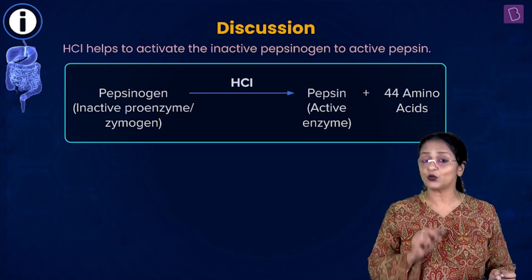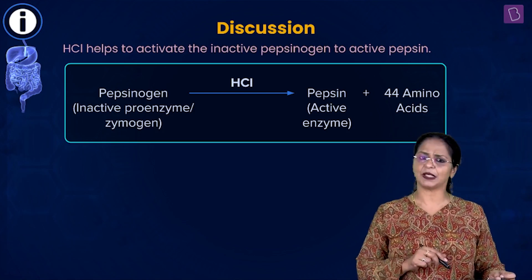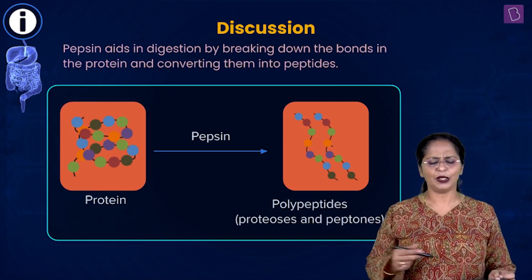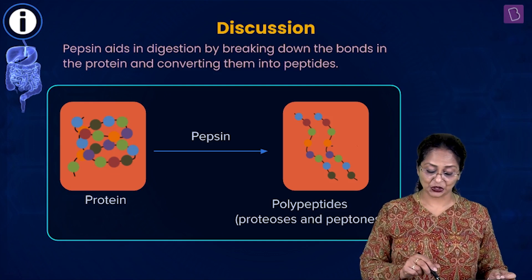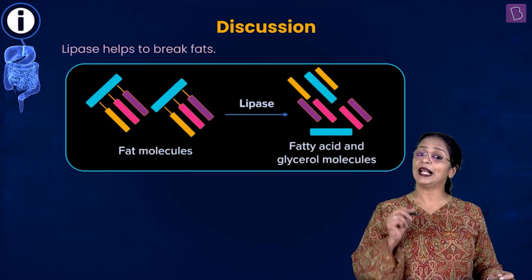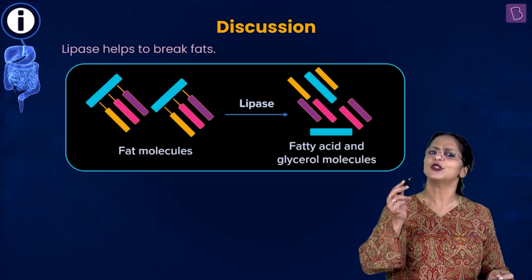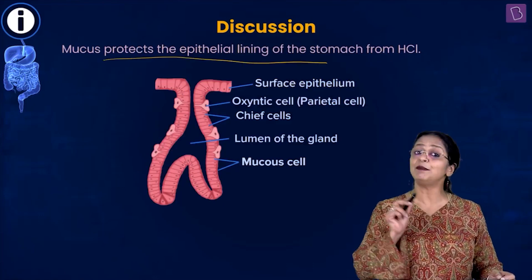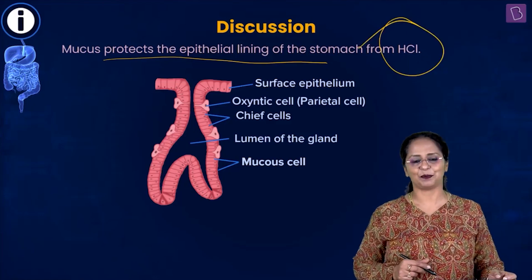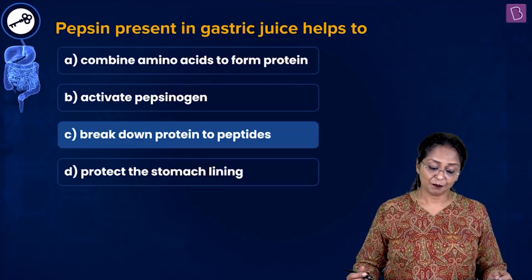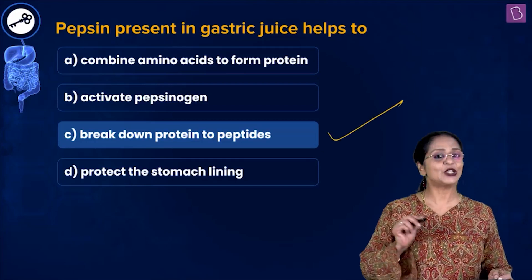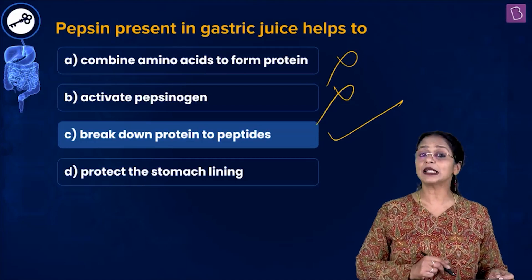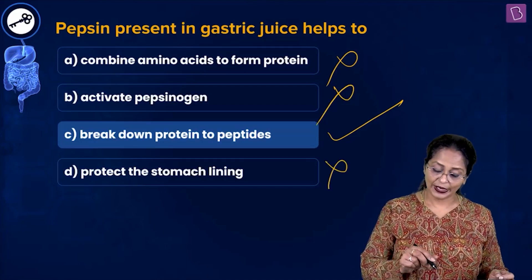Pepsinogen, also called zymogen, is converted to active pepsin in the presence of HCl. Pepsin breaks down complex proteins into proteoses and peptones. Lipase breaks down lipids into diglycerides, monoglycerides, fatty acids, and glycerol. Mucus protects the epithelial lining of the stomach from the acidic HCl. So the answer is C — pepsin breaks down proteins to peptides. A, B, and D are eliminated.